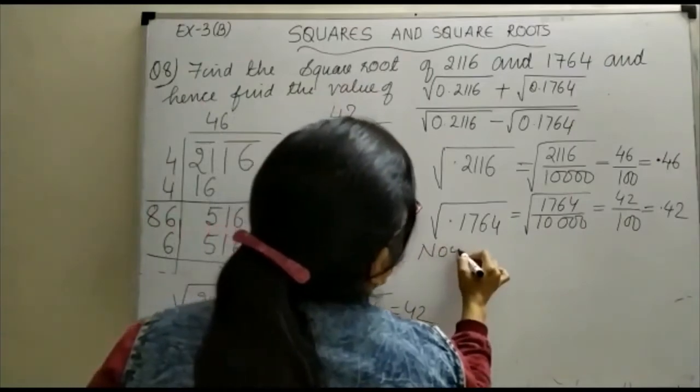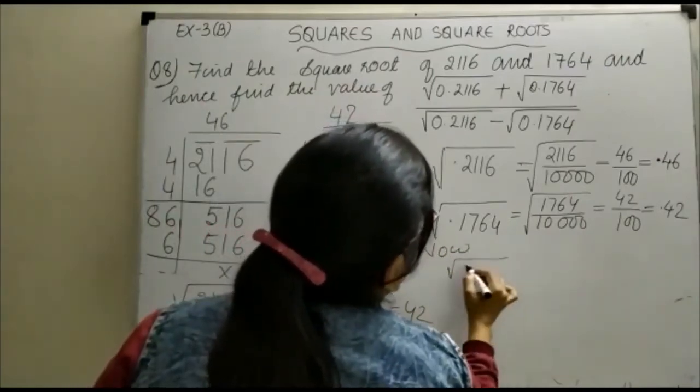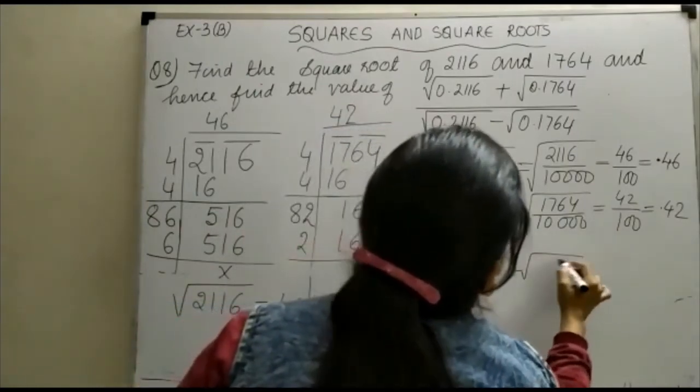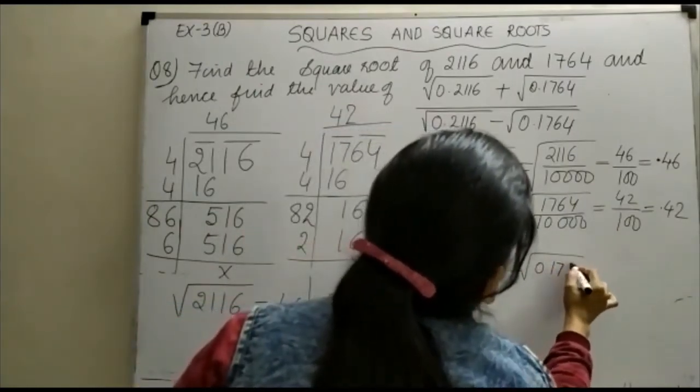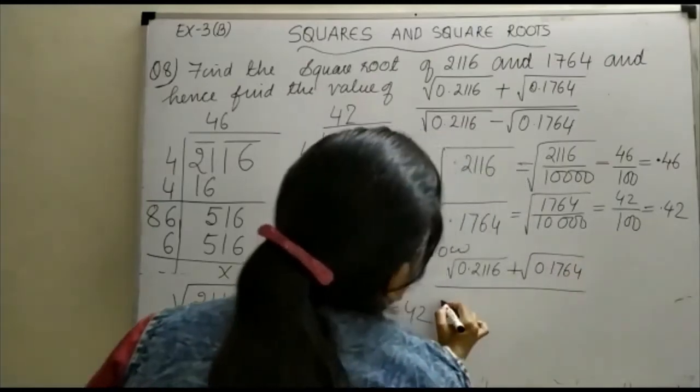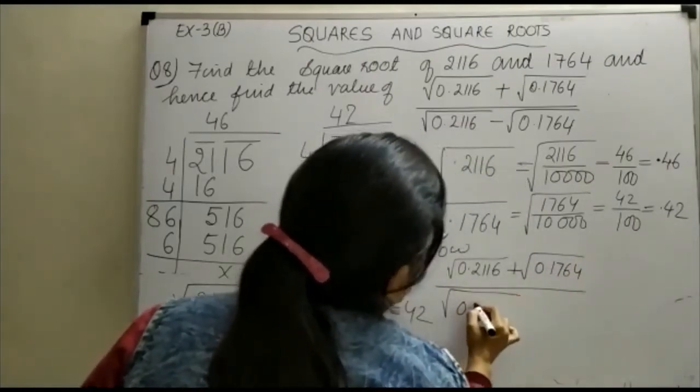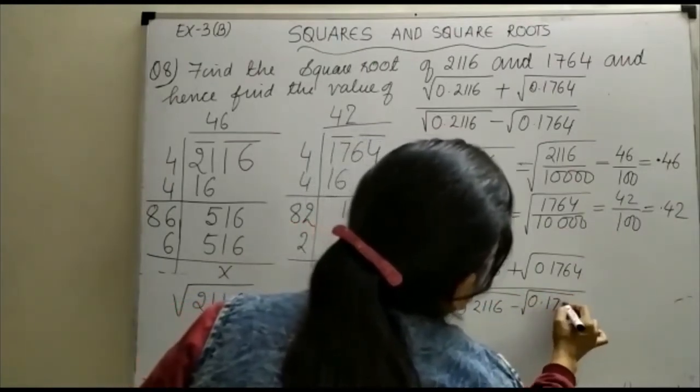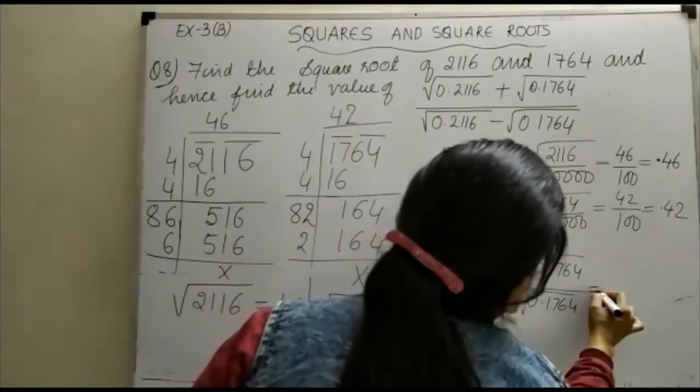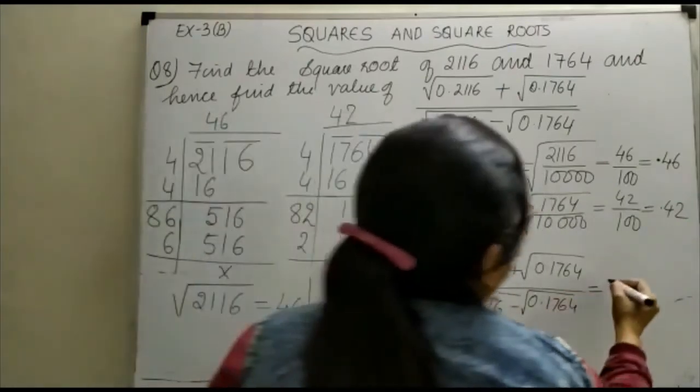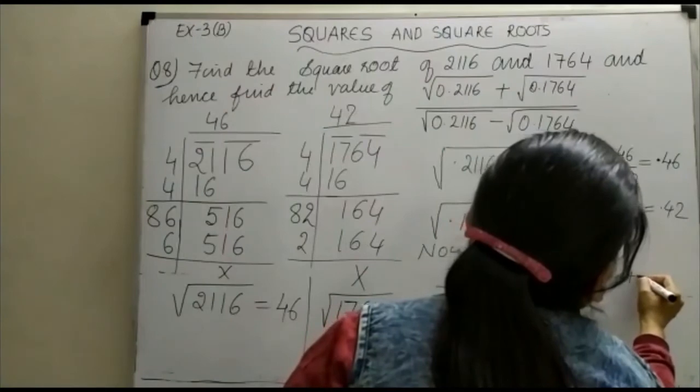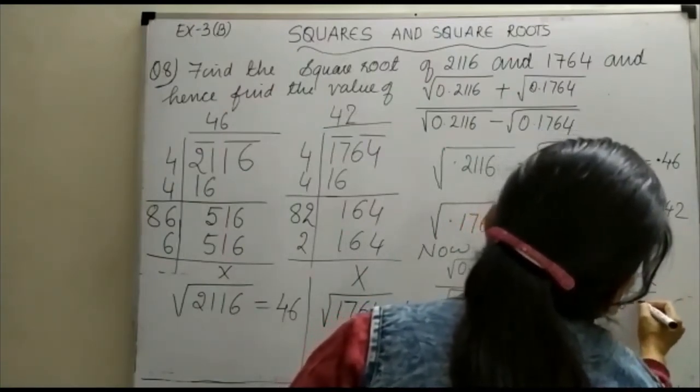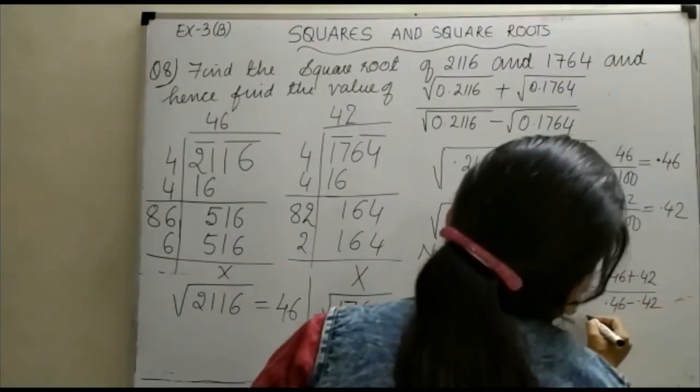Now you can just keep the value: 0.2116 plus 0.1764 upon 0.2116 minus 0.1764 is equal to, सबसे पहले, 0.46 plus 0.42 upon 0.46 minus 0.42.